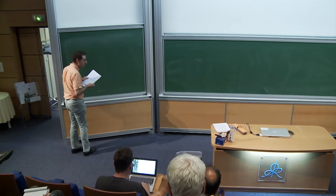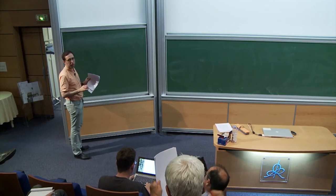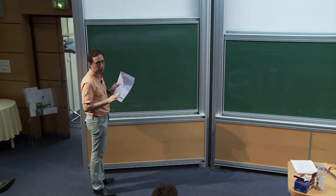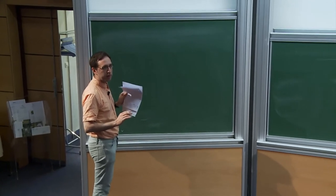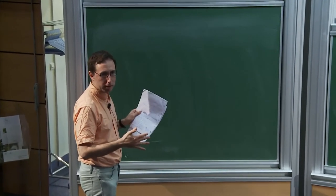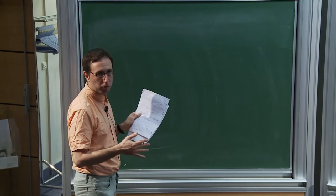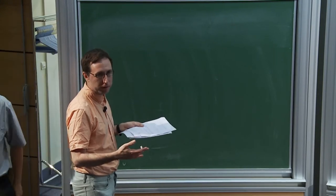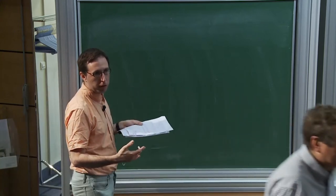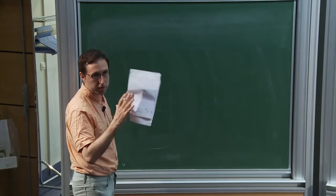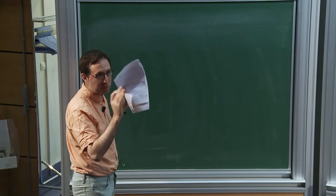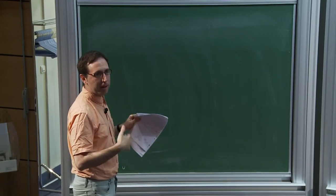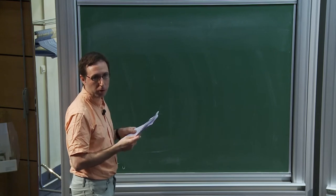As I said yesterday, today we will start with something of historical importance: the sum-product theorem. But instead of proving that and then using it to prove a statement about growth in groups, I will show you how it's closely related — and in fact essentially equivalent — to growth in the affine group, a very nice small group, and then I will show you how to prove growth in that group.